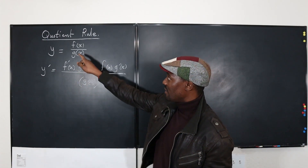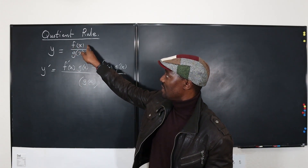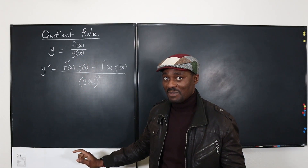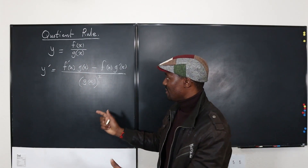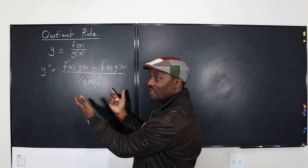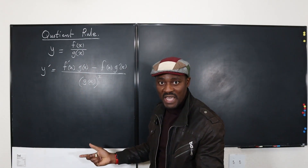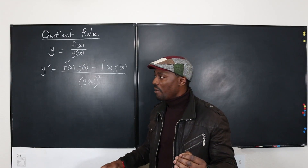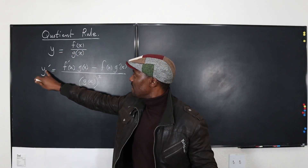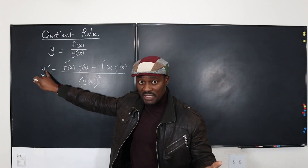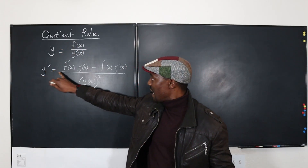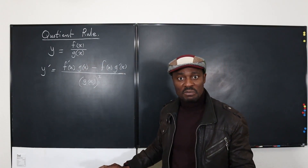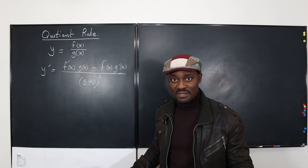Remember, it is not the derivative of the top divided by the derivative of the bottom. As you can see, it looks a little bit more complicated. So how do we go from just this to find y prime, that is dy/dx, and then dy/dx looks as complicated as this.